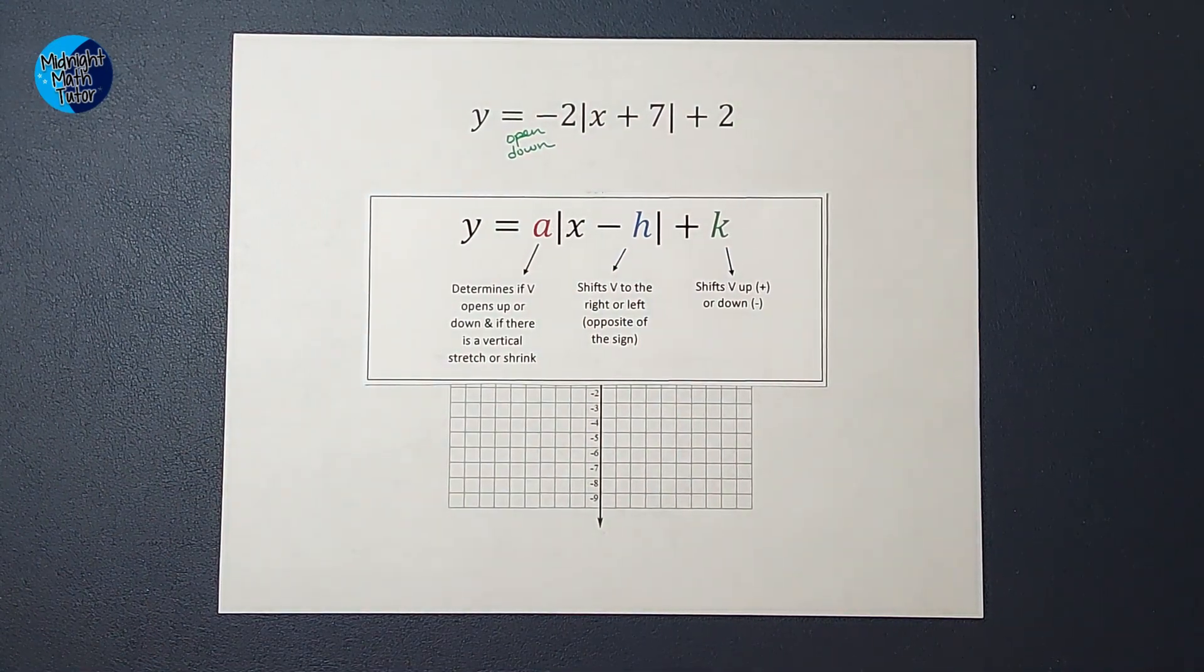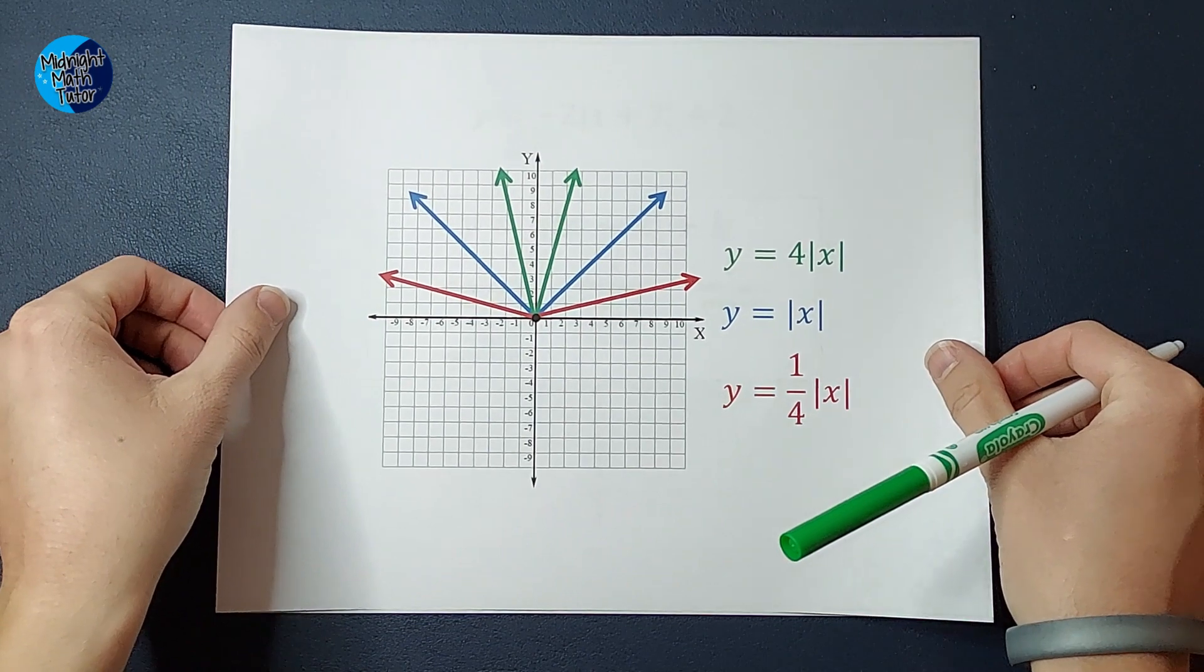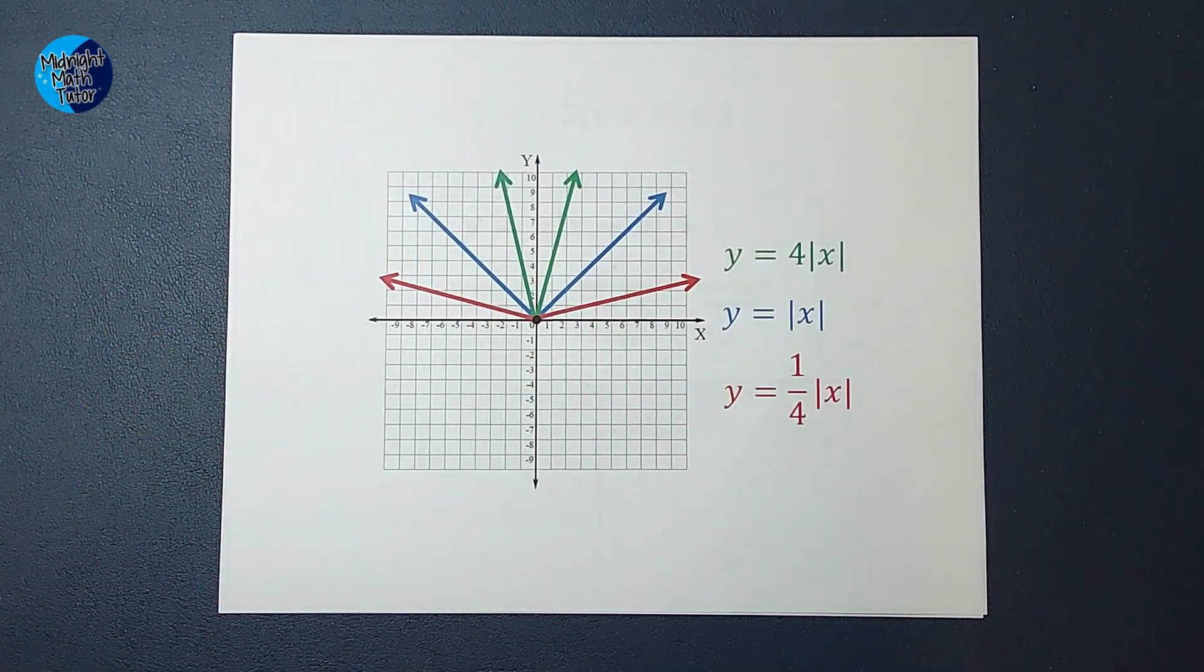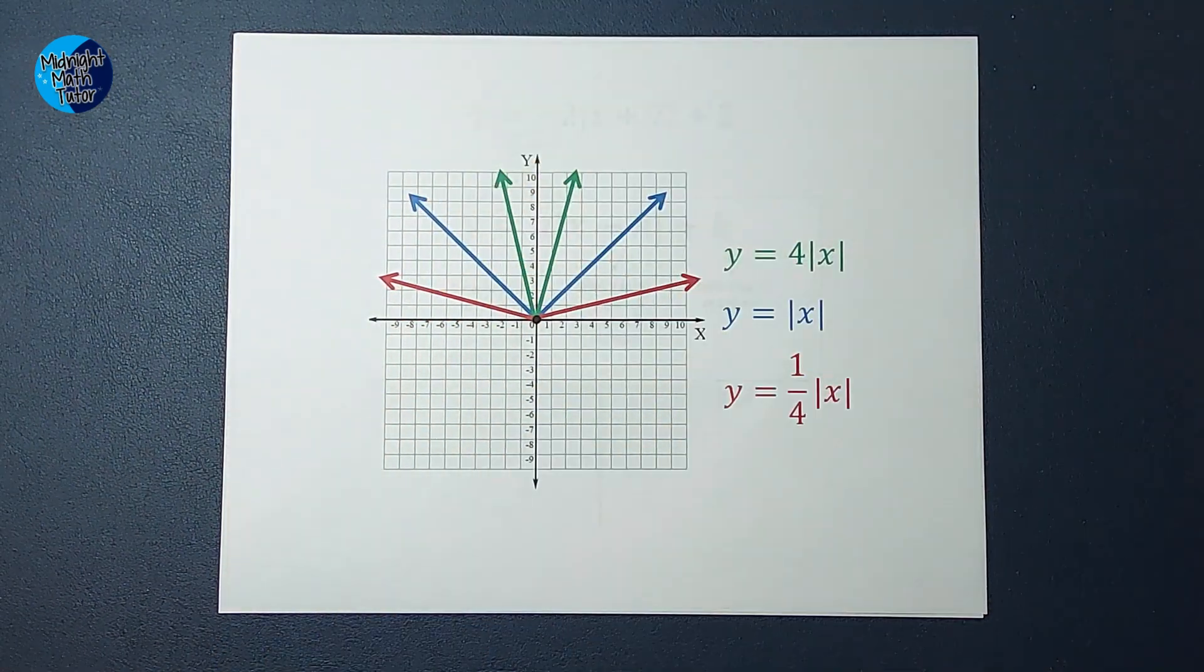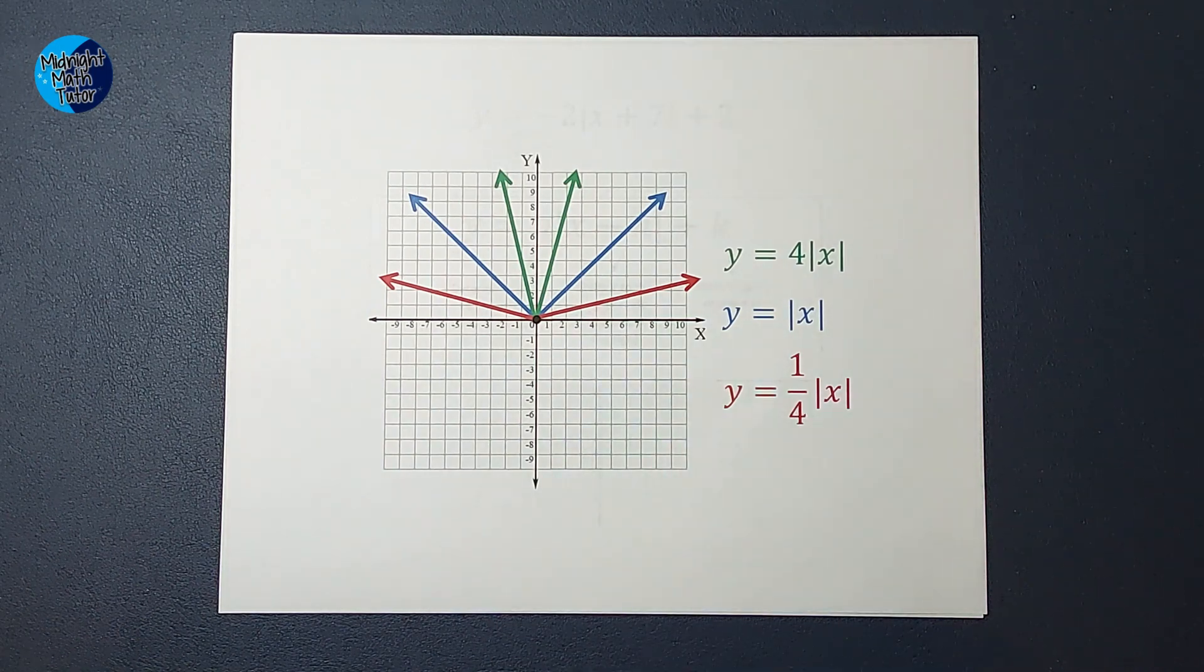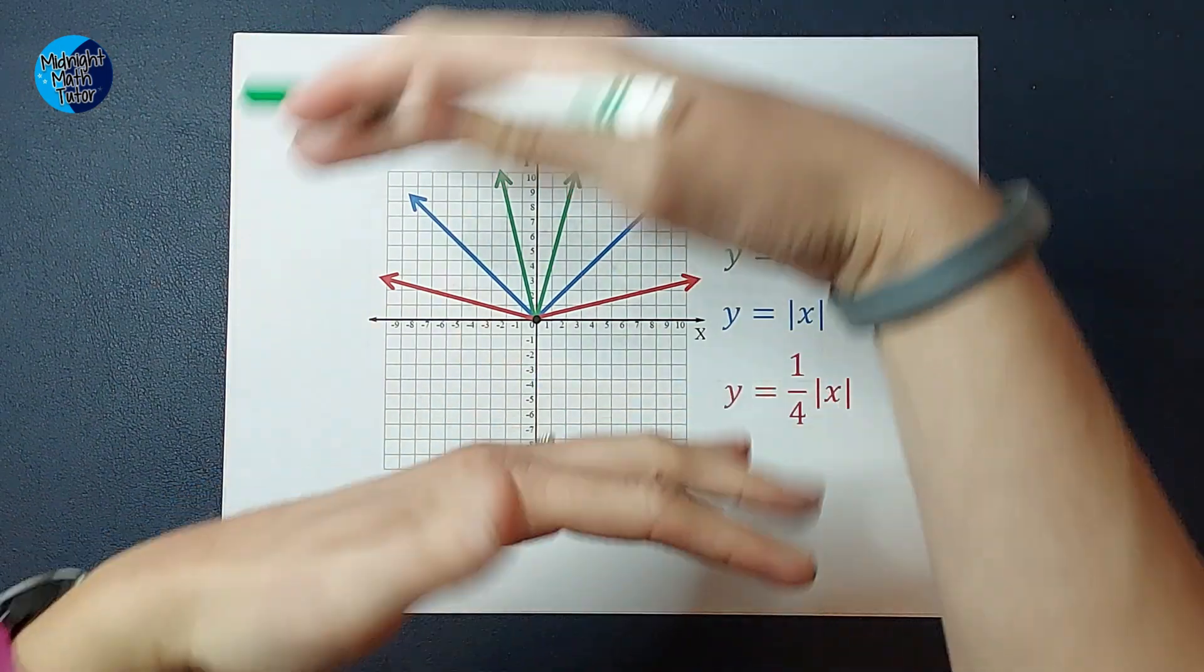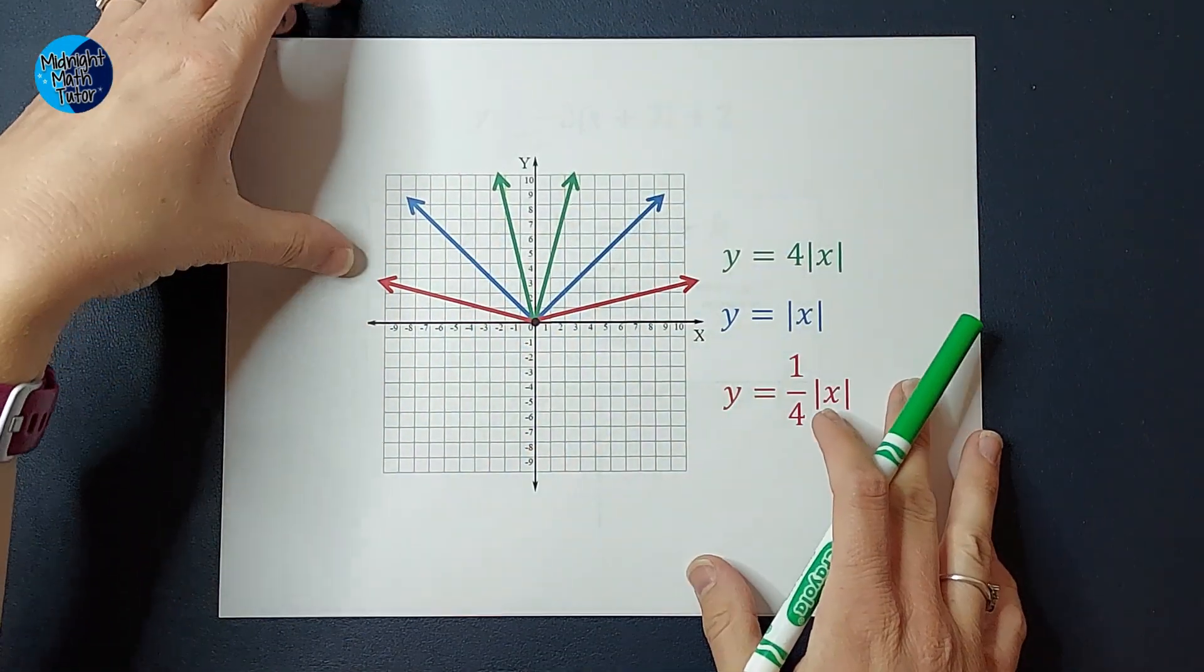What does that 2 tell me? That tells me that my graph is going to be skinnier than the parent graph. You'll see the blue, that's my parent graph. The green has a 4 out front, and you see how it's stretched and skinnier. Now if you have a fraction out front, check out the red graph, and you'll see how it's compressed. In ours, it's negative, so they're going to be flipped around, but you get the idea.